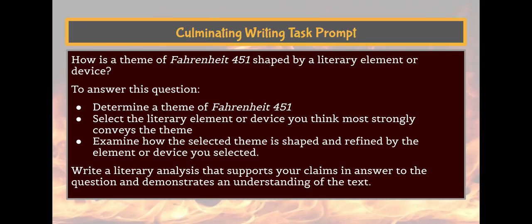Before we get into this lesson, let's look at our Culminating Writing Task prompt: How is a theme of Fahrenheit 451 shaped by a literary element or device? To answer this question, you must first determine a theme of Fahrenheit 451, then select the literary element or device you think most strongly conveys the theme, then examine how the selected theme is shaped and refined by the element or device you selected, and finally write a literary analysis that supports your claims and demonstrates an understanding of the text.